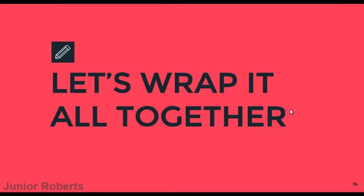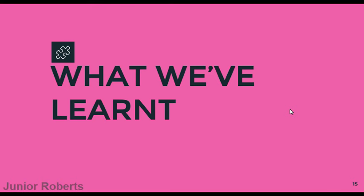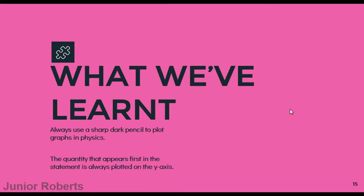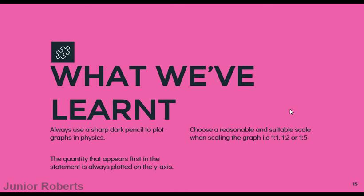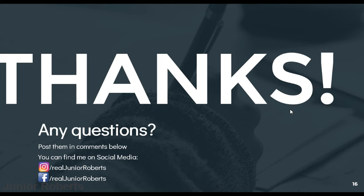To quickly wrap up what we've learned: we should always use a sharp dark pencil to plot graphs in physics to enable neatness. The quantity that appears first in the statement is always plotted on the y-axis. We want to choose a reasonable and suitable scale using ratios such as 1 to 1, 1 to 2, 1 to 5, or decimal or multiples of those. And finally, the line of best fit is the line that shows the best average of all the plotted points.